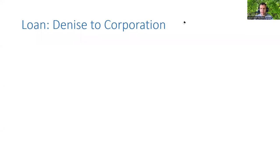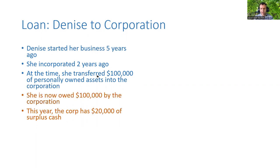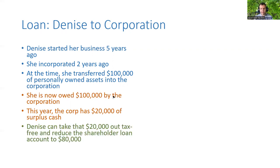So for starters, we'll look at the good one — where we have a shareholder who has loaned money to her corporation. Zanice started her business unincorporated five years ago, then incorporated a couple of years ago. When she incorporated, she had $100,000 of personally owned assets that she transferred into the corporation. Her corporation owes her $100,000. This year, the corporation has $20,000 of surplus cash, and she is going to take that out tax-free and reduce the shareholder loan account to $80,000.